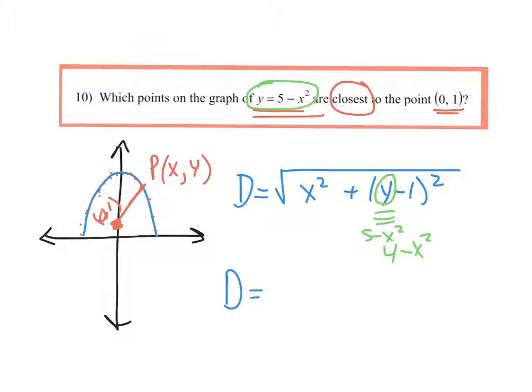So I have this function, D equals the square root of x squared plus (4 - x²)². And I'm going to need to take the derivative of this so I can find the critical points.